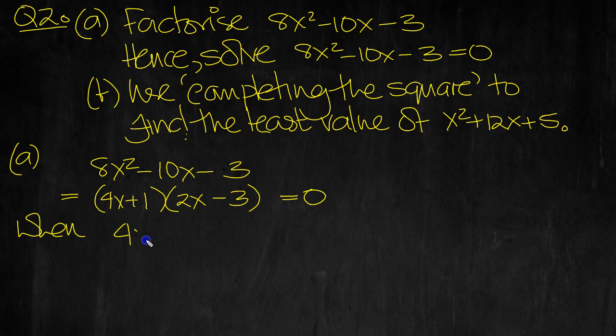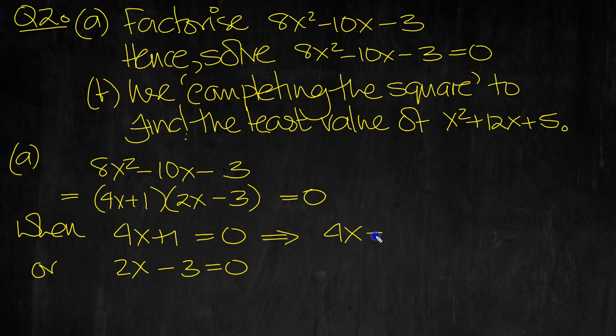When 4x + 1 equals 0, or 2x - 3 equals 0. This one. 4x equals minus 1. Move the 1 over. And then move the 4 from times to divide. Minus 1 quarter. So there's the first solution, this one.